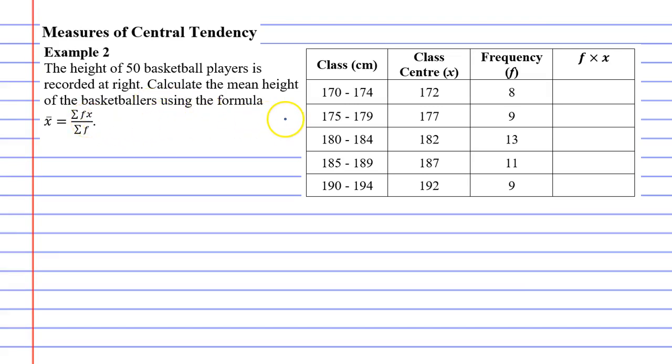First thing I want to talk about is, this is a frequency table, which makes things a little more complicated. First thing you might notice is, in the first row, we've got a frequency of 8. So there were 8 players whose height was between 170 and 174. Now the issue here is, we don't actually know the exact heights, which makes it difficult to add them up.